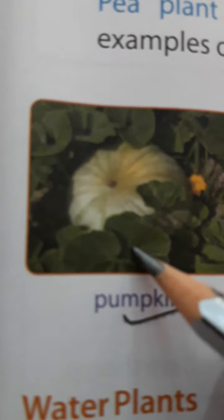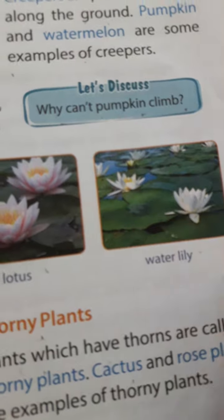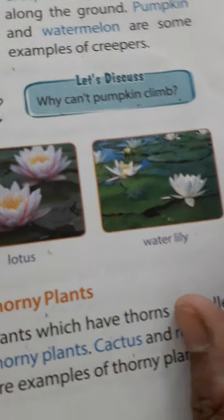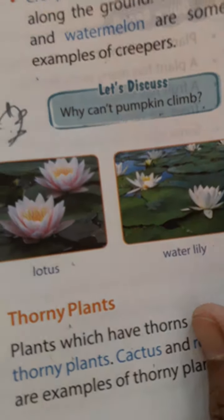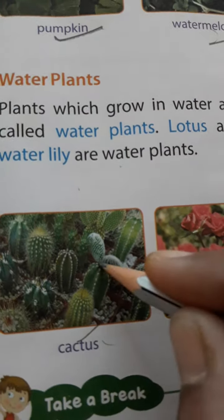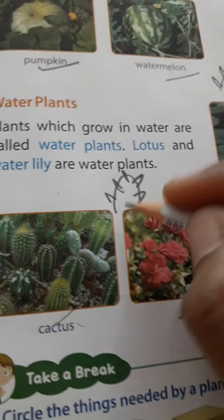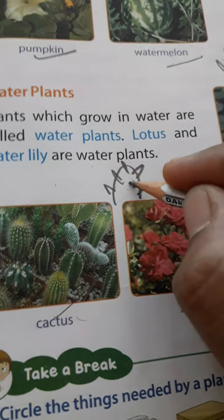Plants which grow in water are called water plants. Lotus and water lily are examples of water plants. Then there are thorny plants — cactus and rose are examples of thorny plants. The cactus has spines instead of leaves and grows in deserts.